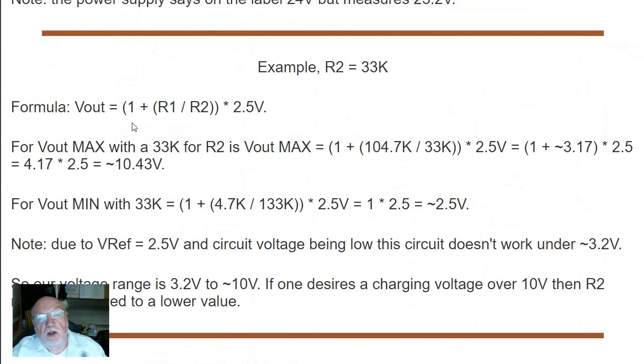Here is your formula: Vout equals 1 plus R1 divided by R2 times 2.5. For Vout max with a 33K resistor for R2 is 1 plus 104.7K divided by 33 times 2.5.